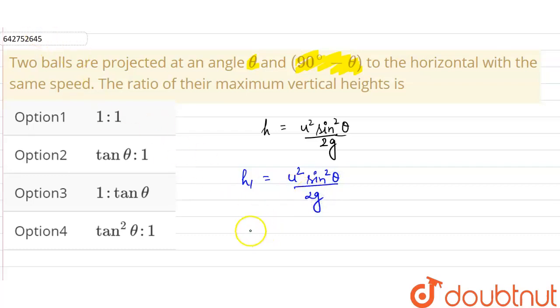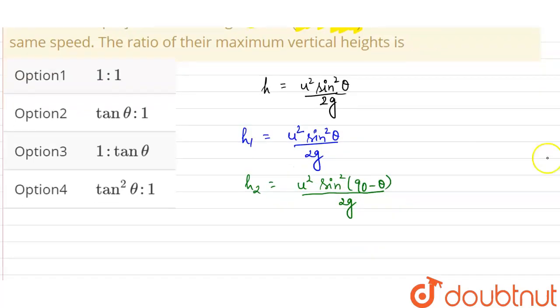And for the second particle, which is projected with an angle of 90 minus theta, the maximum height is given as u square sine square 90 minus theta divided by 2g. Now sine 90 minus theta is cos theta, so it will be u square cos square theta divided by 2g.